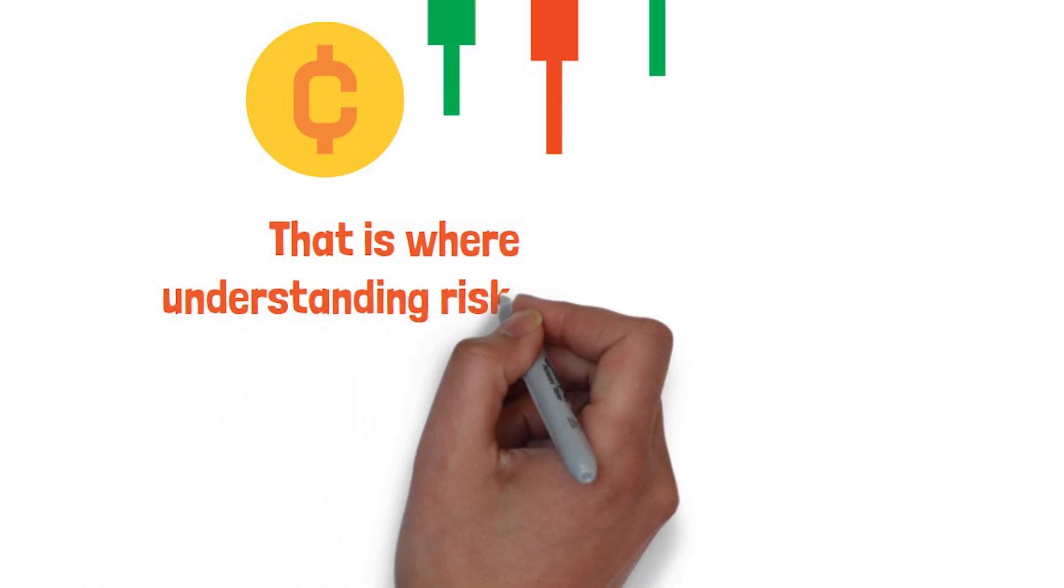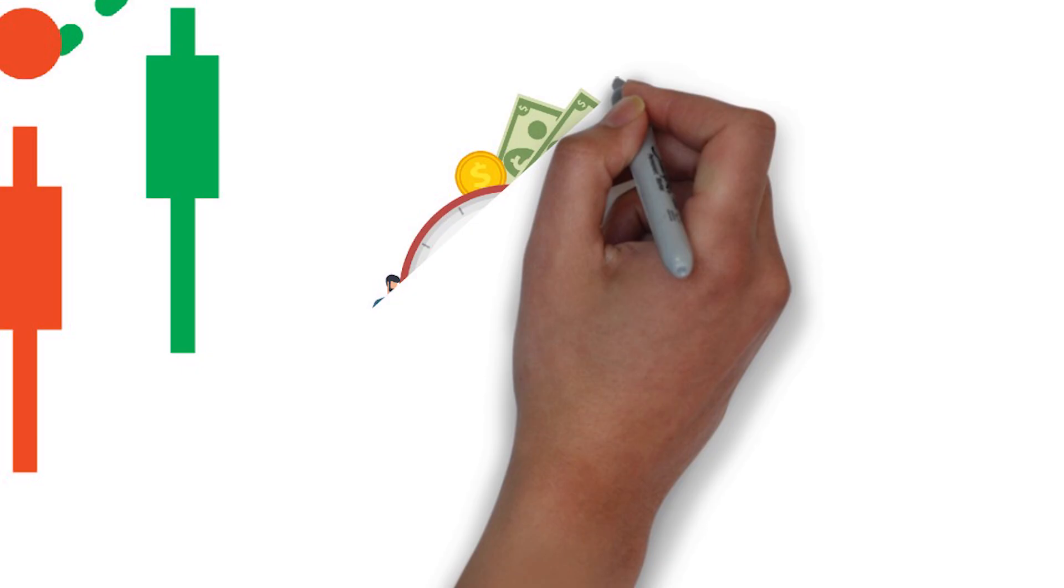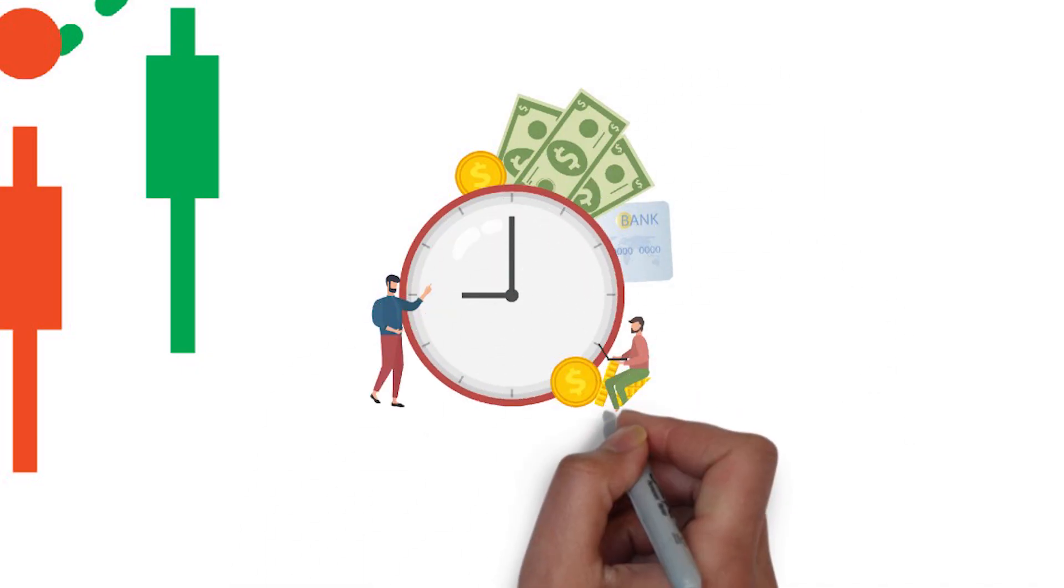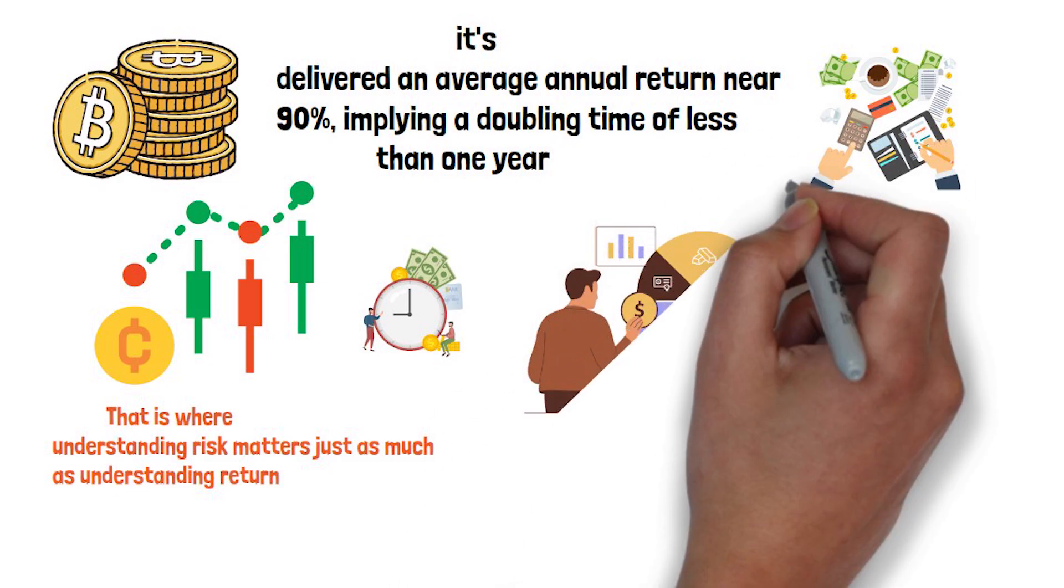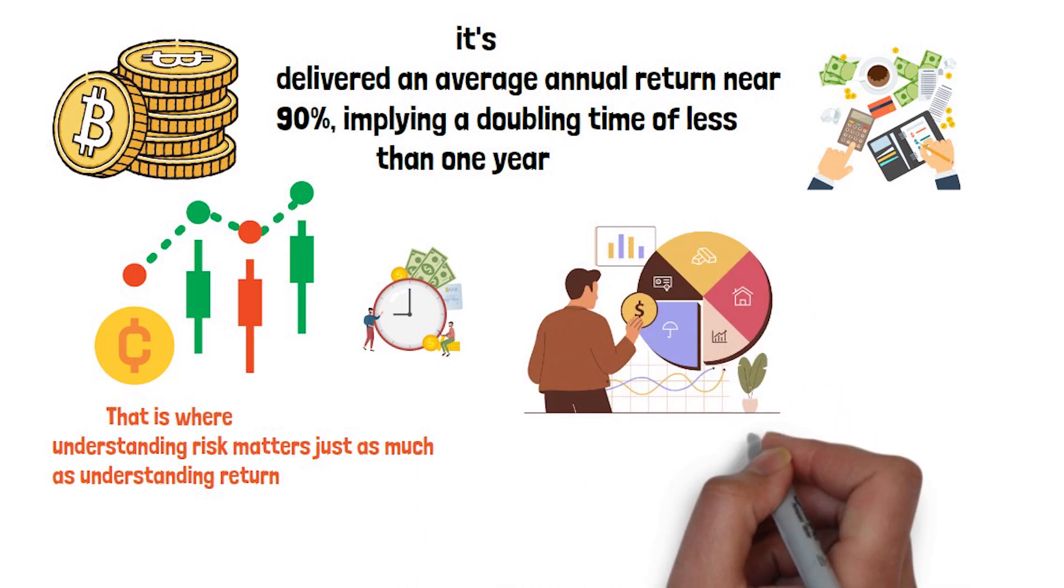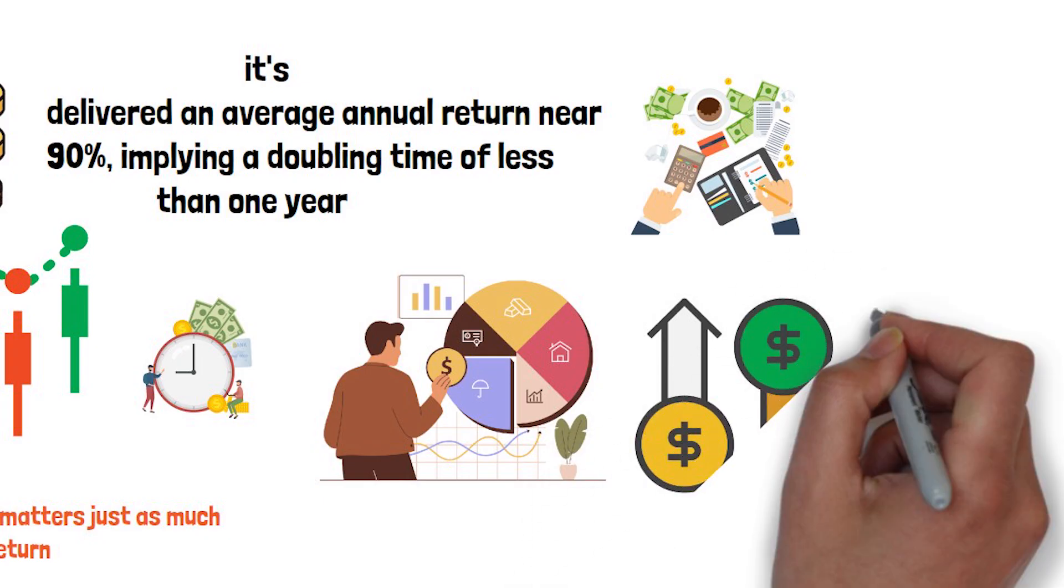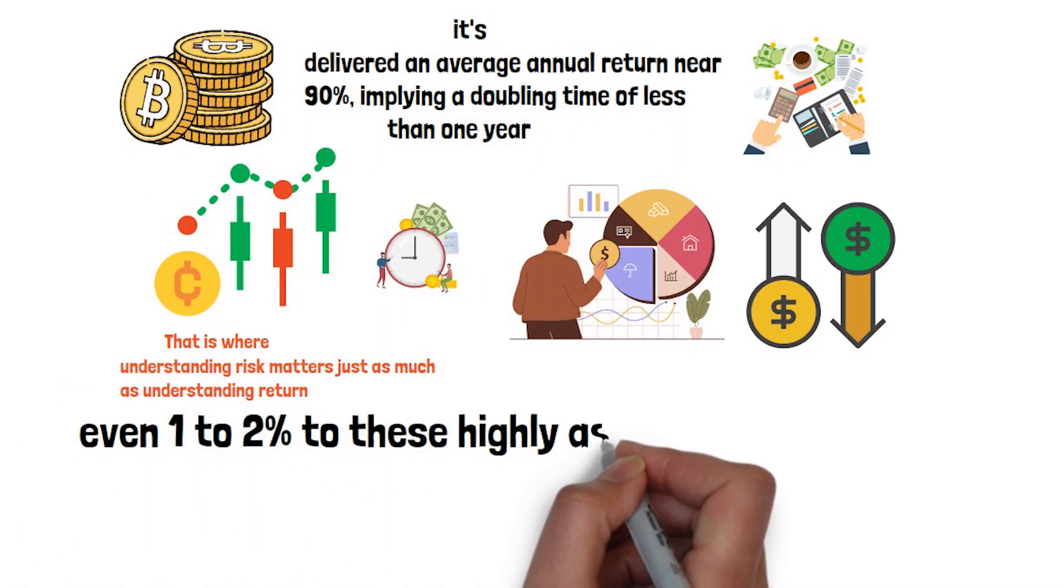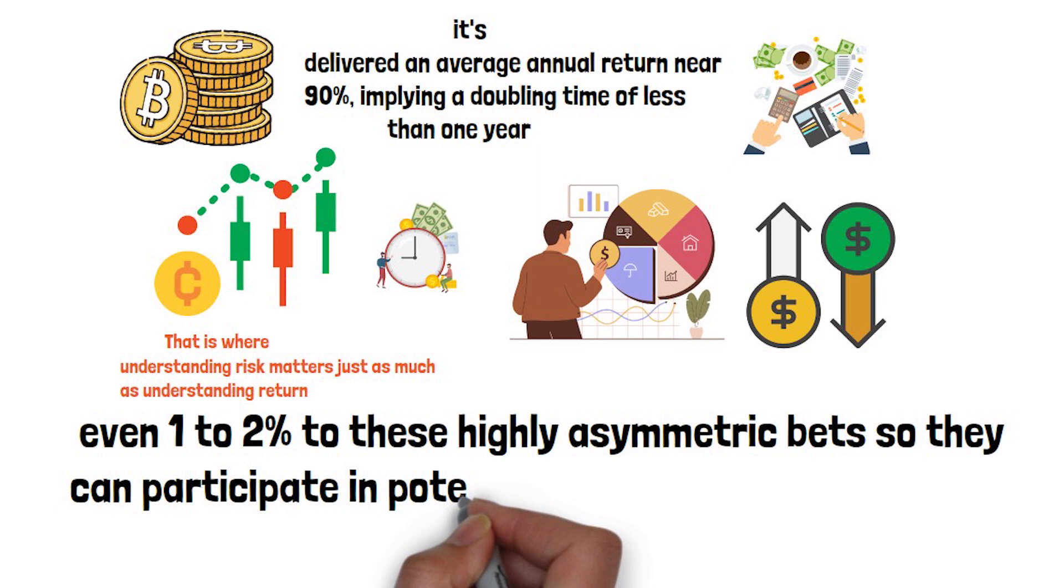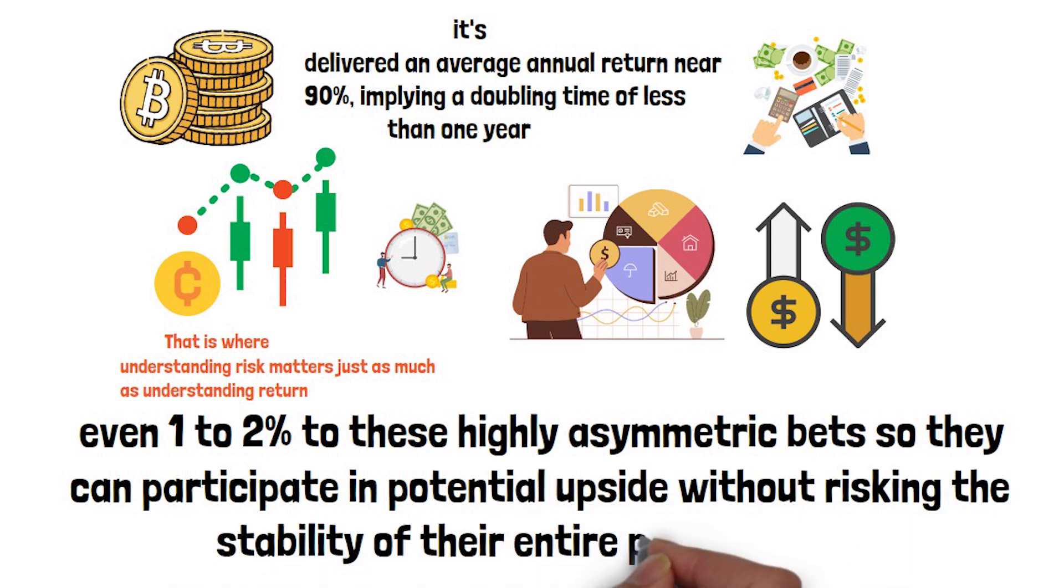That is where understanding risk matters just as much as understanding return. A shorter doubling time only helps if you can stay invested long enough to benefit from it. A portfolio heavily tilted towards something like Bitcoin might see rapid growth in a strong run, but it also faces a high probability of severe losses. That's why some investors allocate only a small slice, even 1-2% to these highly asymmetric bets, so they can participate in potential upside without risking the stability of their entire portfolio.